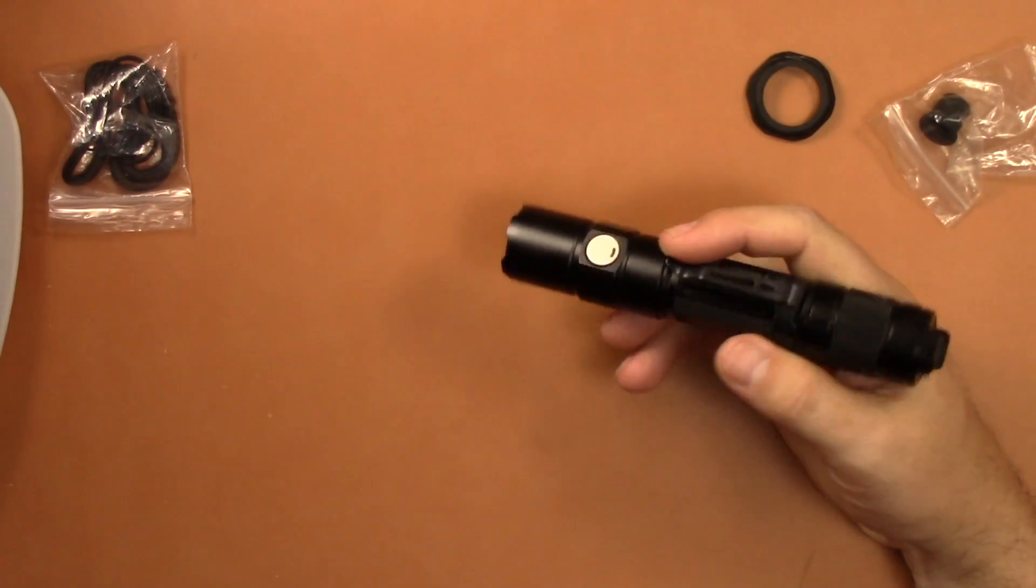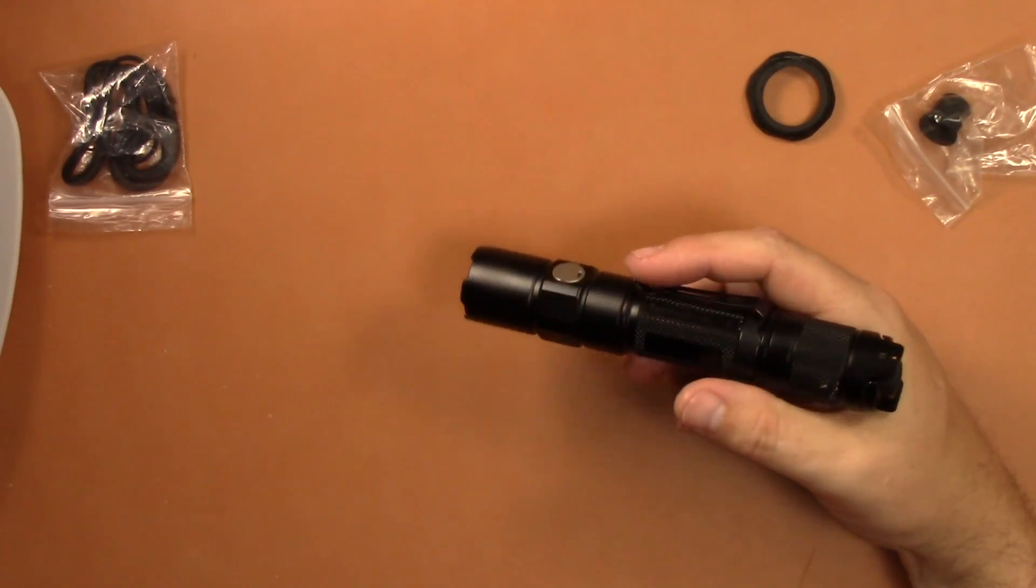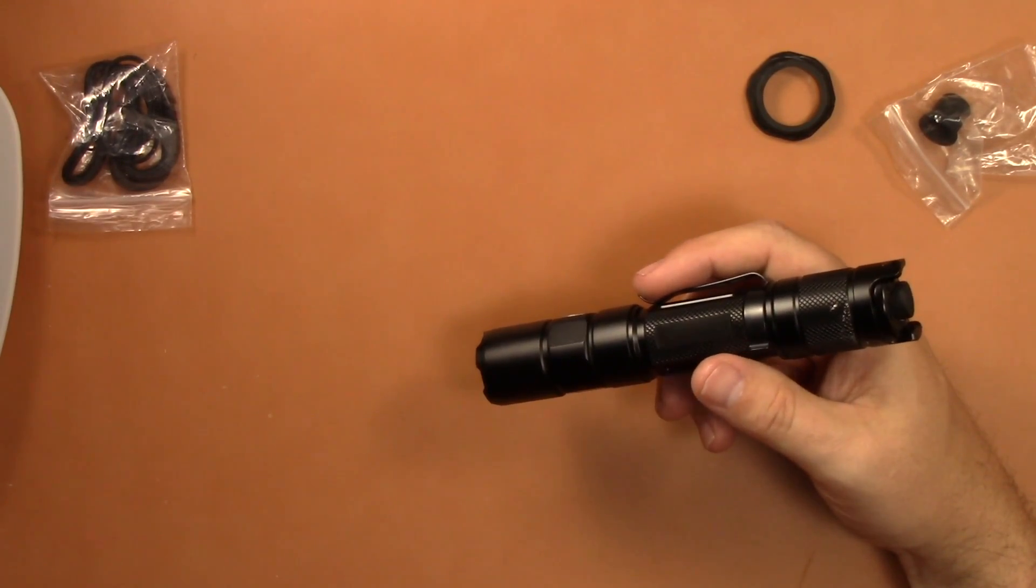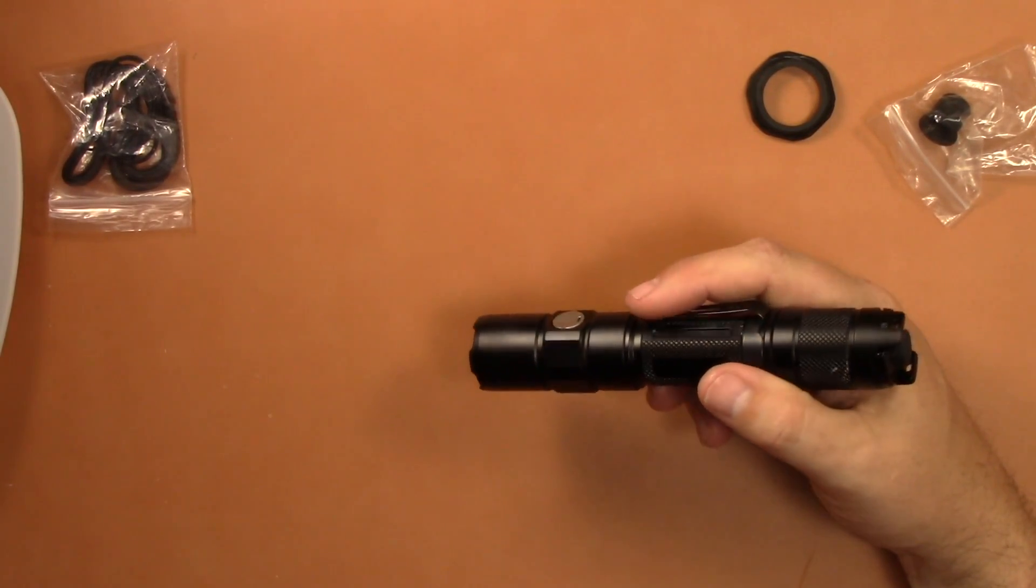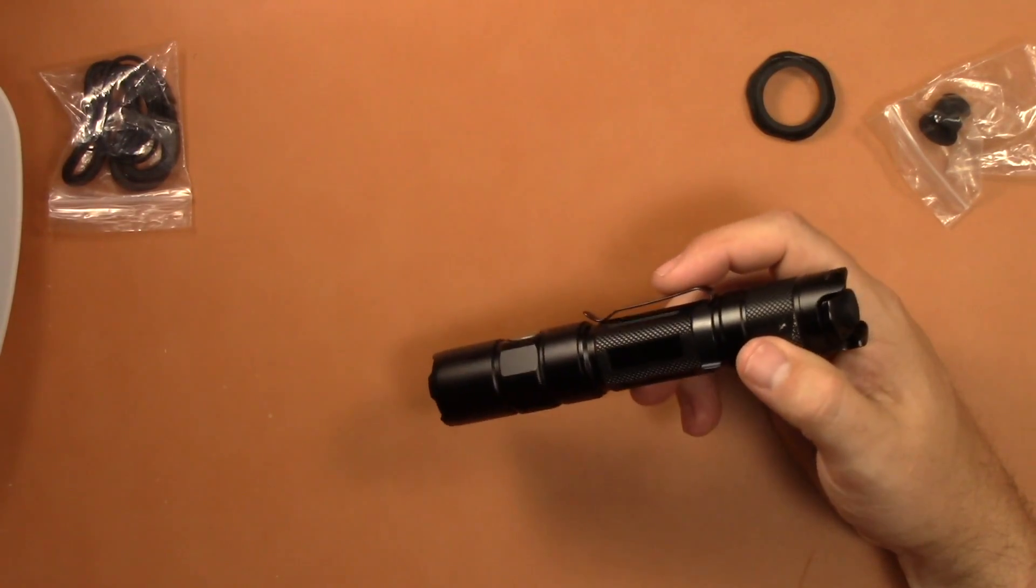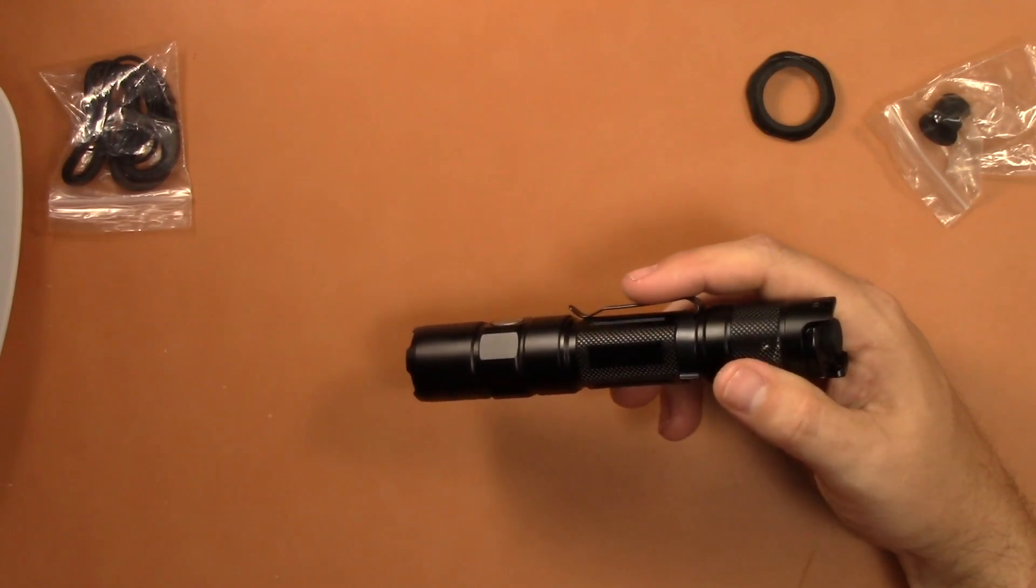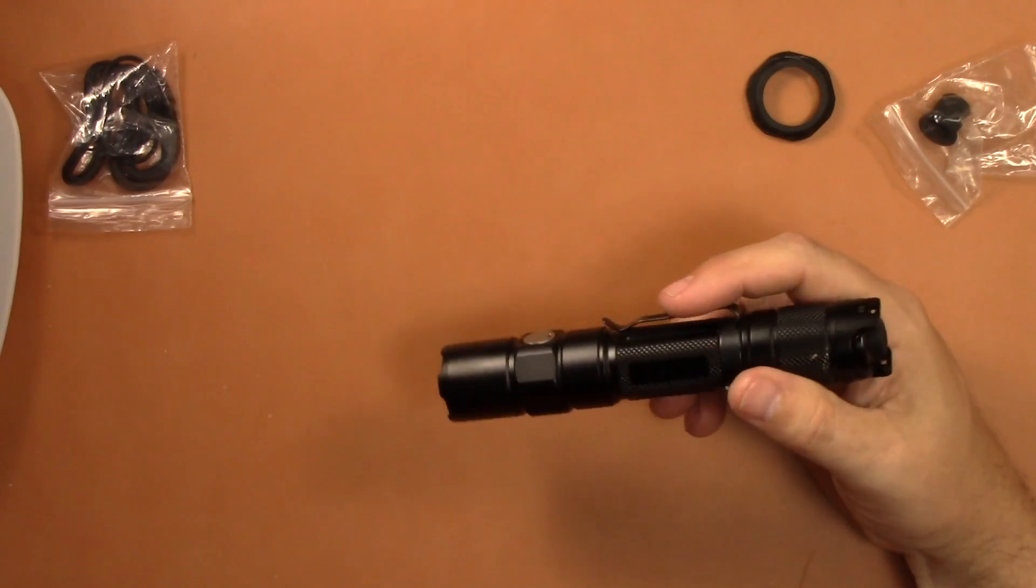Tactical mode, you're going to get strobe, ultra low, middle, high, and turbo. Outdoor, you're going to get all the modes. And you're looking at about three minute run time on turbo with 1.1 hours on high, so 900 lumens more realistically. That's interesting that the run times are on a 3,800 milliamp battery and it gives you a 2,600 milliamp battery. Interesting.